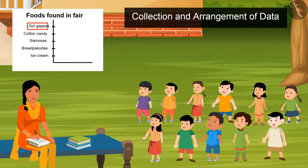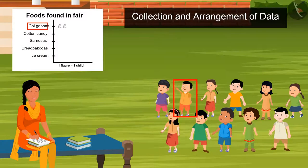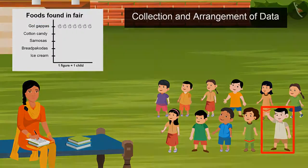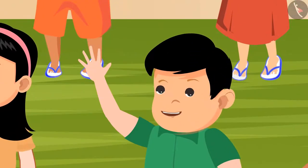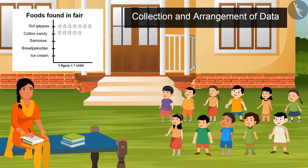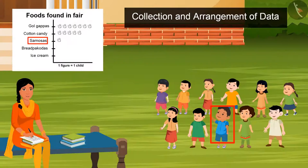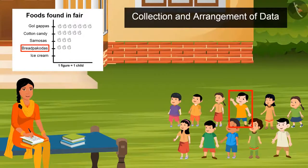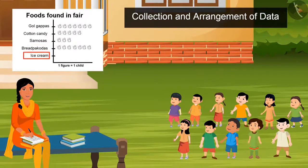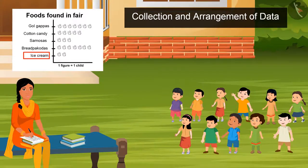So, now tell me, who all wants to enjoy Gold Cafe? 1, 2, 3, 4, 5, 6, and 7. Who all wants to eat cotton candy? 1, 2, 3, 4, 5, 6, and 5. Sister, I have cavities, so I can't eat sweet things. Who all wants to eat ice cream? 1, 2, 3, 4, 5, 6, and 7. Who all wants to eat bread pakoras? 1, 2, 3, 4, 5, 6, and 7.